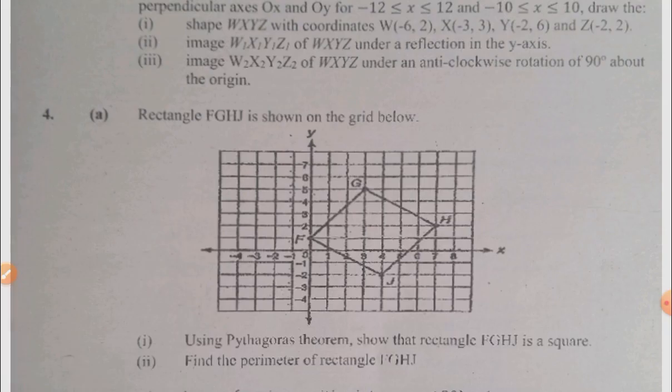Then question four, you have a rectangle on a grid. Use Pythagorean theorem to show that FG HJ is a square, then find the perimeter of FG HJ. Interesting question actually.